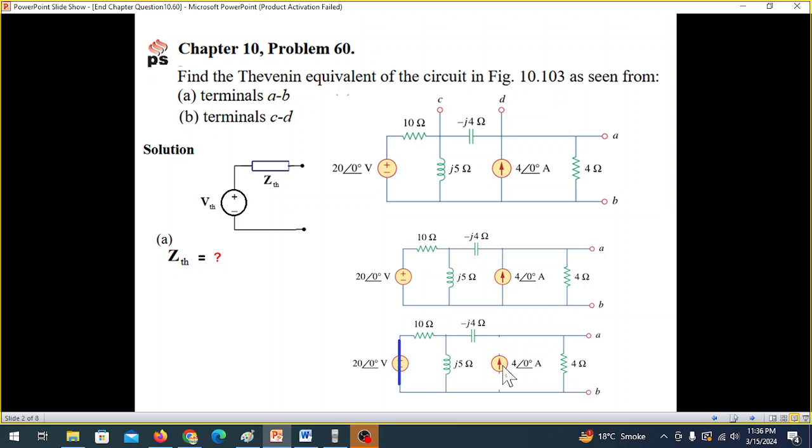So just like this, we have open circuit at the current source and short circuit at the voltage source. And so our circuit will now look like this. And this we have to solve.